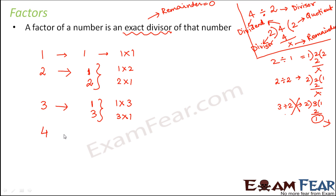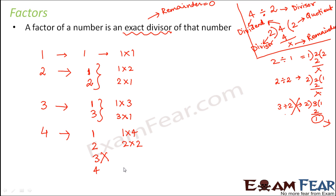Let's talk about 4. In the case of 4, 1 is a factor because 1 × 4 = 4. Is 2 a factor? Yes, because 2 × 2 = 4. Is 3 a factor? No. Is 4 a factor? Yes, because 4 × 1 = 4. So 1, 2, and 4 are the factors of 4.